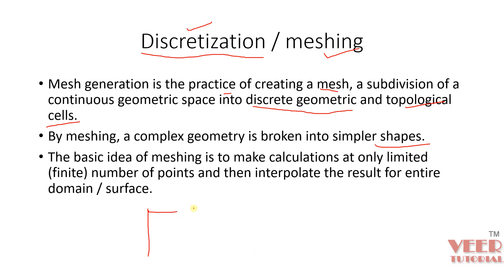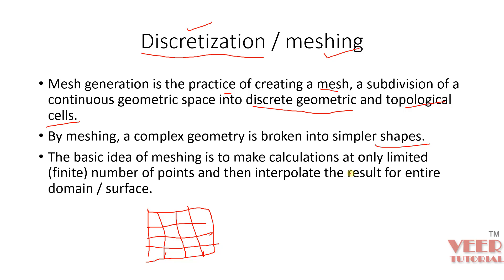Let's say we have a plate of any dimension. What we do in meshing is we break this plate into small rectangular sections. So the basic idea of meshing is to make calculations at only a limited or finite number of points, and then interpolate the result for the entire domain.